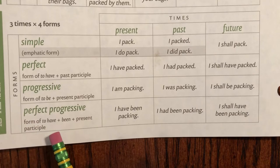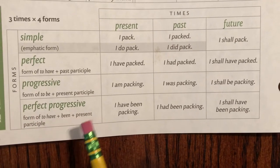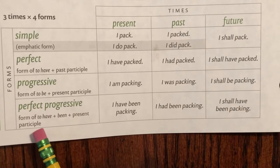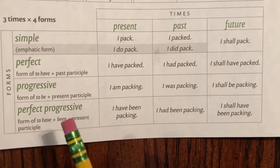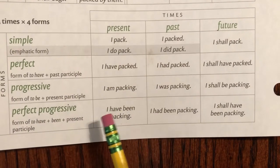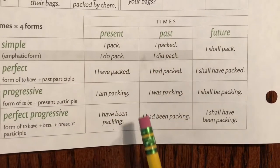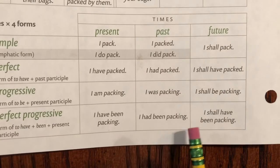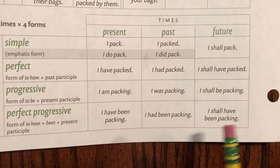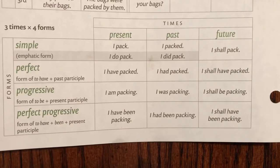Progressive uses 'to have' and 'been' and the present participle — perfect progressive. Present: I have been packing. Past: I had been packing. Future: I shall have been packing. 12 verb tenses.